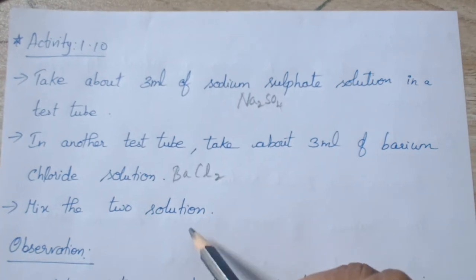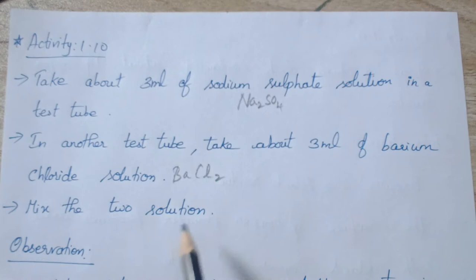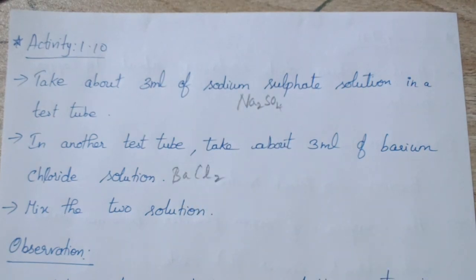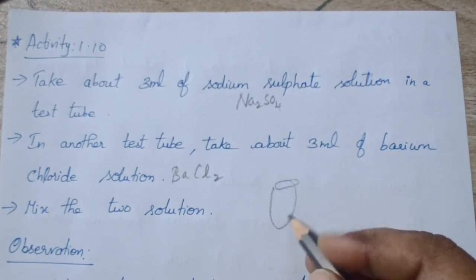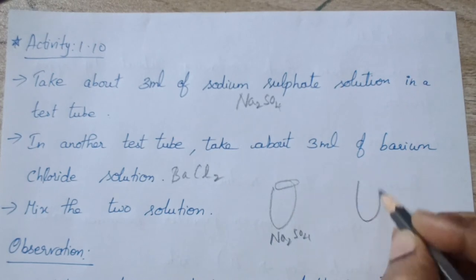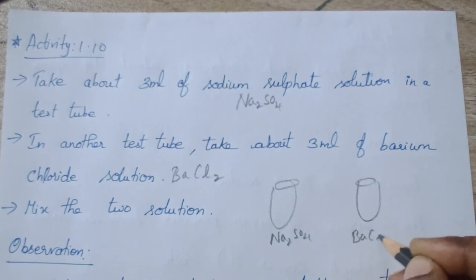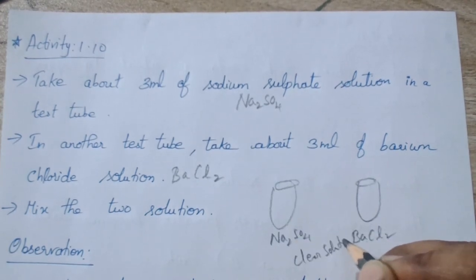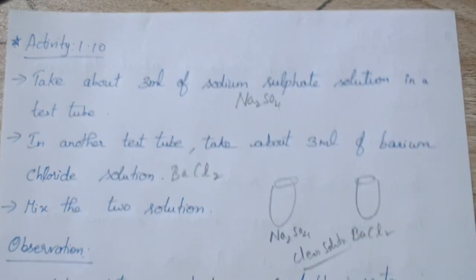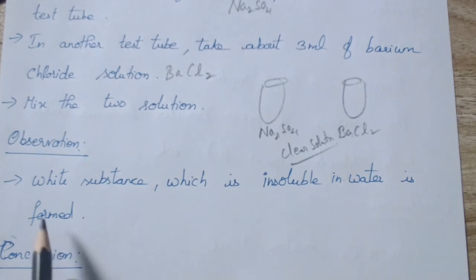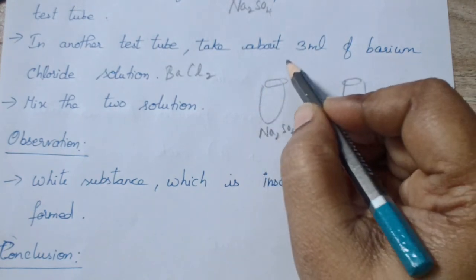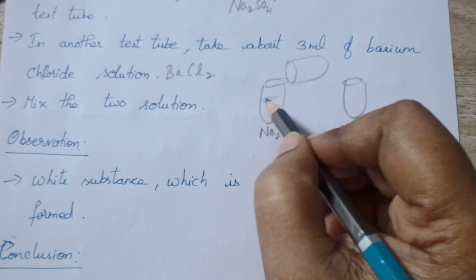Then you will get a barium chloride solution. Mix these two solutions. We are going to mix the sodium sulfate solution with the barium chloride solution. What is your observation? This test tube contains Na₂SO₄ and this test tube contains BaCl₂. These two are clear, transparent solutions. When you mix them, you will get a white substance which is insoluble in water.